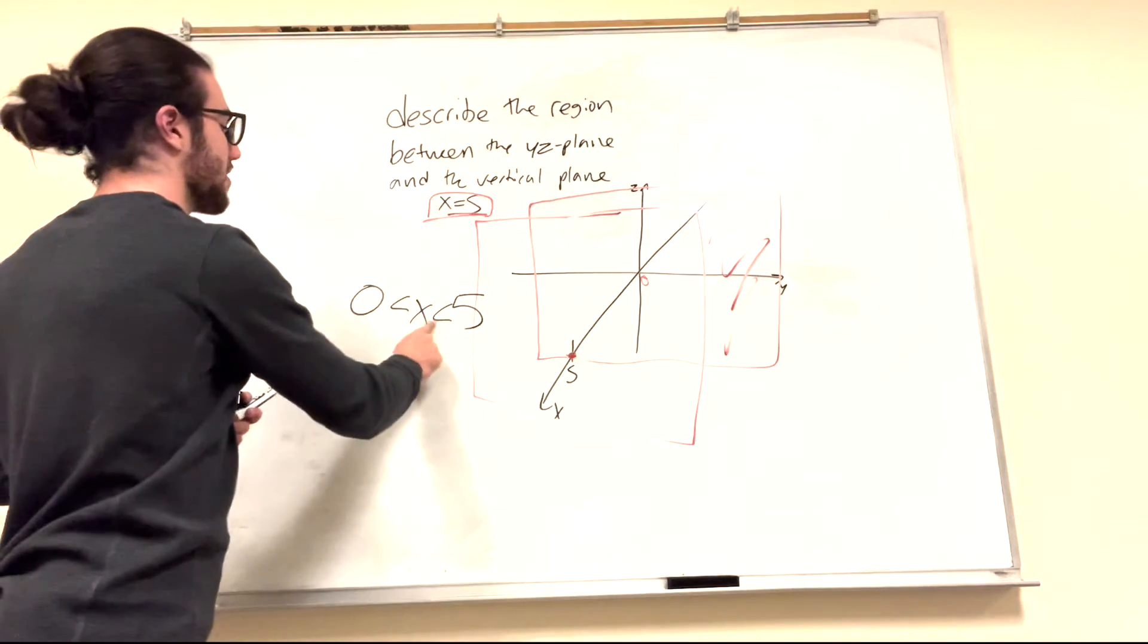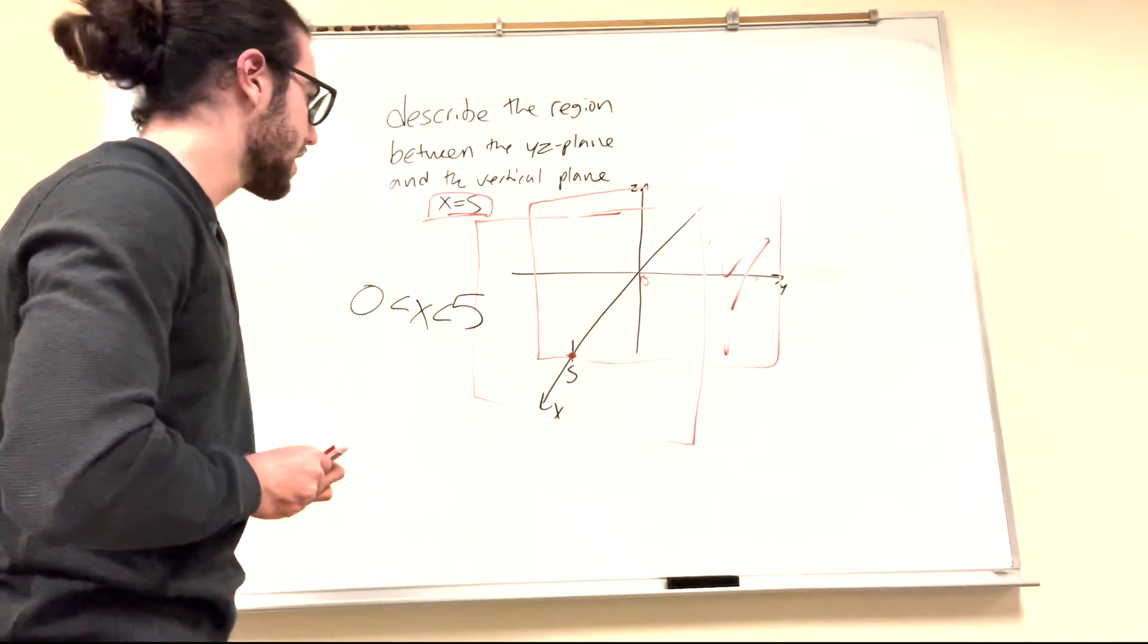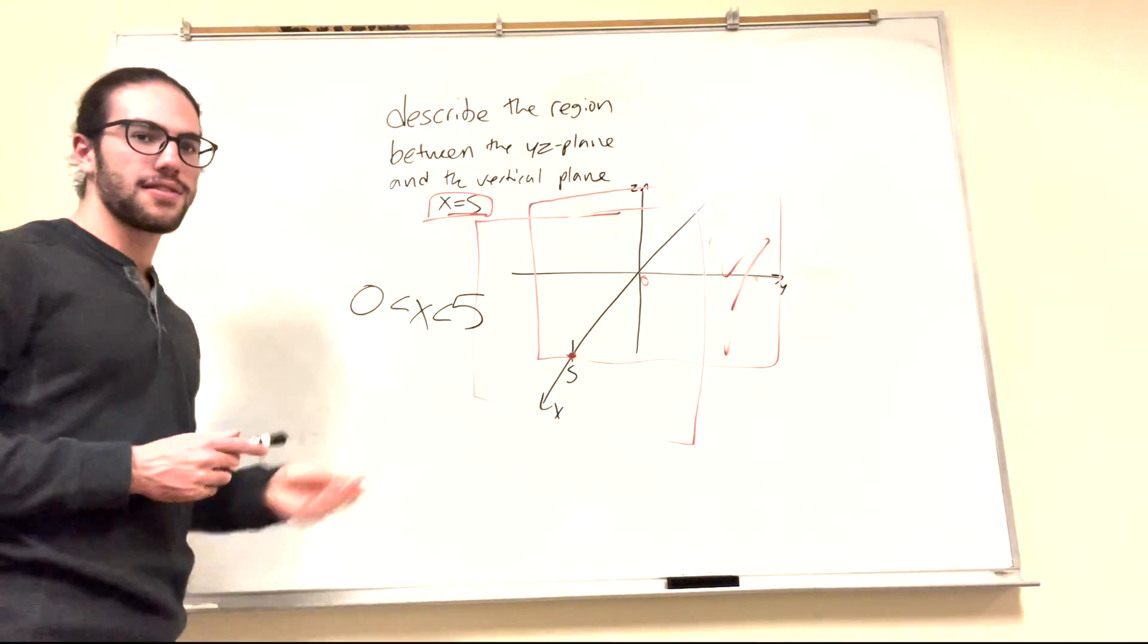Not sure, never mind. It's just in between, so it's not equal to. It's just the area in between. So that's the question right there. x is greater than 0 but less than 5.